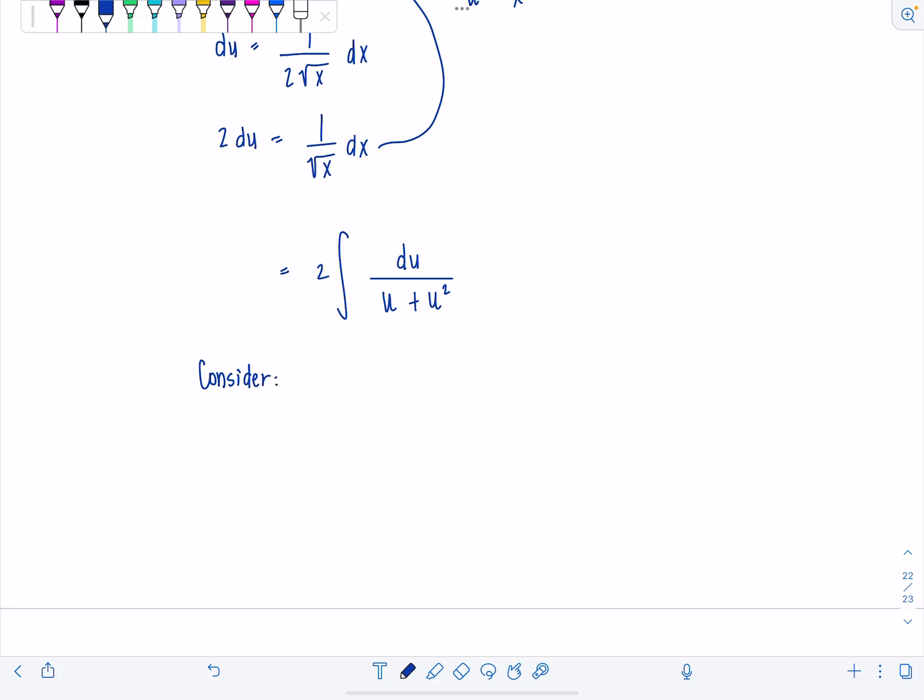Let's consider 1 over, I can take a u out from the denominator and I'm left with 1 plus u. And so both of those are linear factors, not repeated.